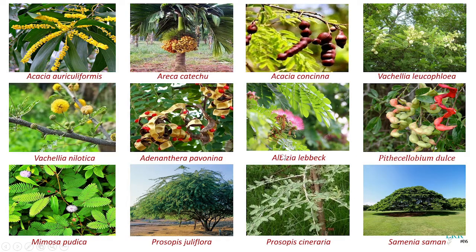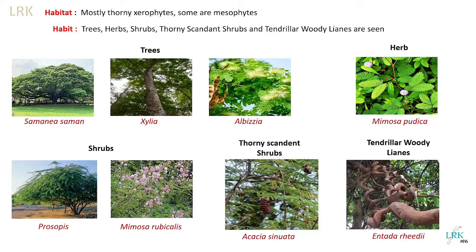Now we will see the vegetative characteristics of this family. Regarding habitat, these plants are mostly xerophytes and very few are mesophytes; they do have thorns on their stems. Regarding habit, all types of plants are seen in this subfamily: you can see trees, herbs, shrubs, thorny scandent shrubs, and tendrillar woody lianas.